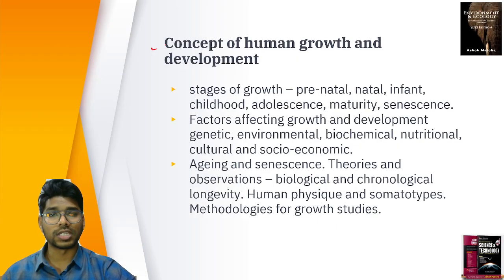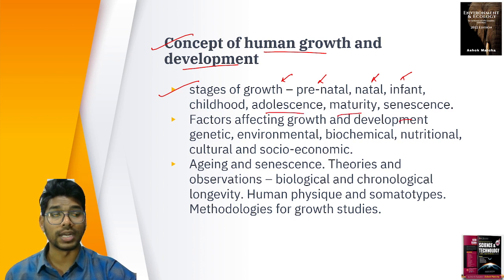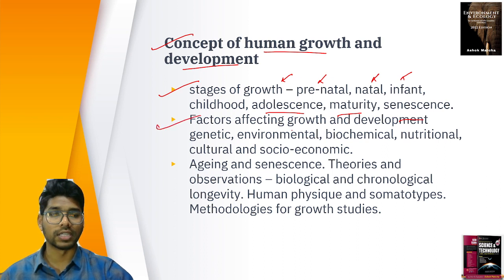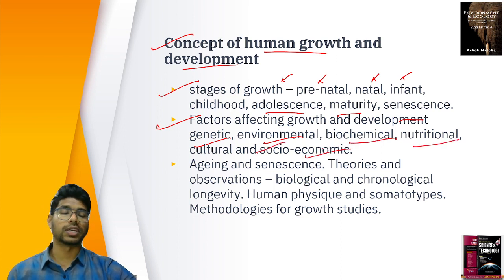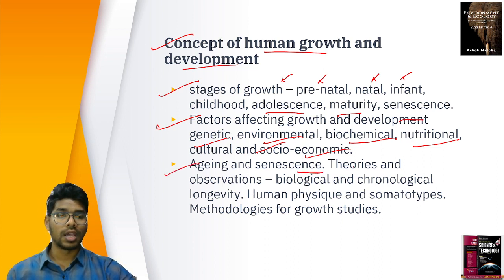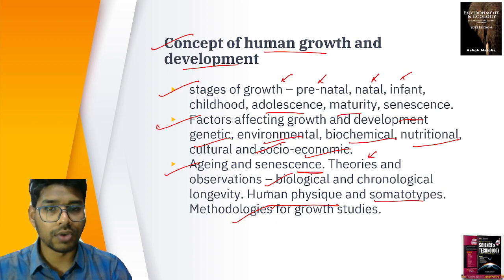We discuss human growth and development — stages of growth from prenatal, natal, infant, childhood, adolescent, maturity to senescence — from birth to death. Factors affecting growth and development include genetic, environmental, biochemical, nutritional, cultural and socioeconomic factors. We also discuss aging and senescence, theories about biological and chronological longevity, human physique and somatotypes, and methodologies for growth studies.